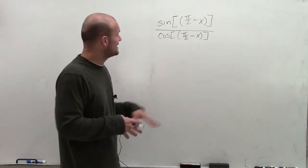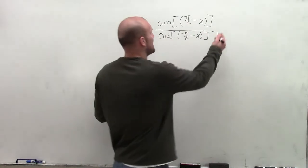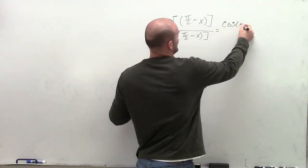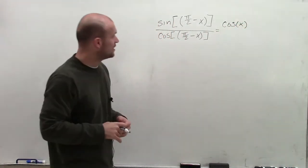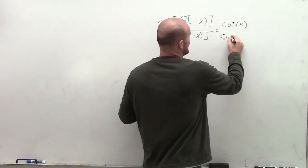So by looking at the co-function identity, when we have sine of (π/2 - x), we know that is equivalent to cosine of x. And we know that cosine of (π/2 - x) is equal to sine of x.